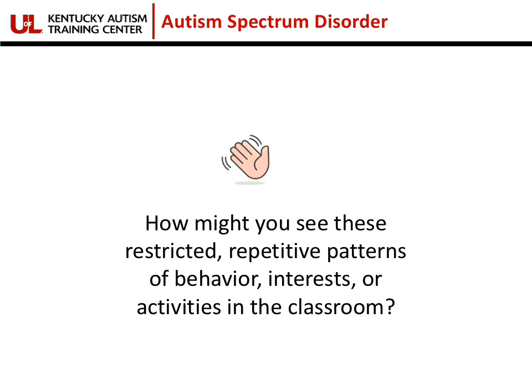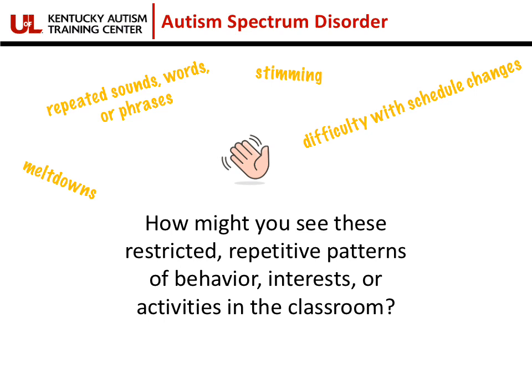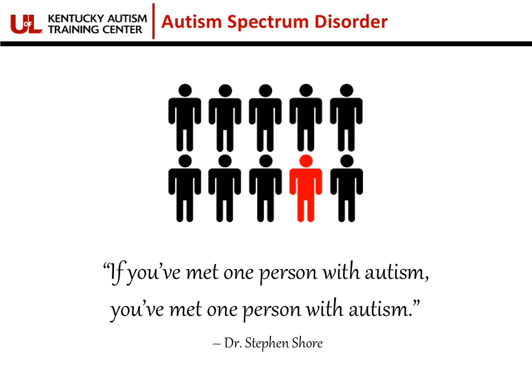When it comes to restricted repetitive behaviors, you may see some repeated sounds, words, or phrases. Your students may have meltdowns when sensory overload happens, and some may stim or have self-stimulatory behaviors. They may have difficulty with schedule changes, and that sensory overload occurs when there is just too much sensory input coming in and they're not able to filter it out.